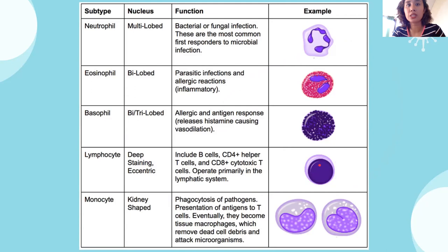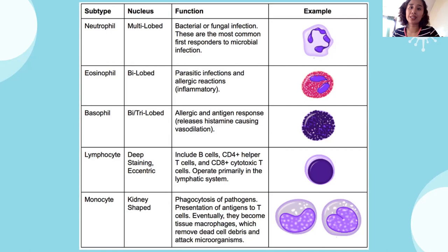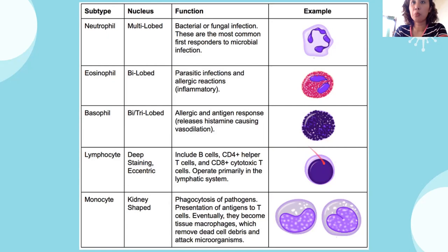Lymphocytes are circular with no lobes — they are your B cells and T cells. Your T cells can be T helper cells or T cytotoxic cells. Lymphocytes have two types: B cells and T cells. Under T cells, there are subtypes — T helper cells and T cytotoxic cells. Monocytes are the largest phagocytes or WBCs, involved in phagocytosis. They are your macrophages — they remove dead cell debris like garbage truck collectors.